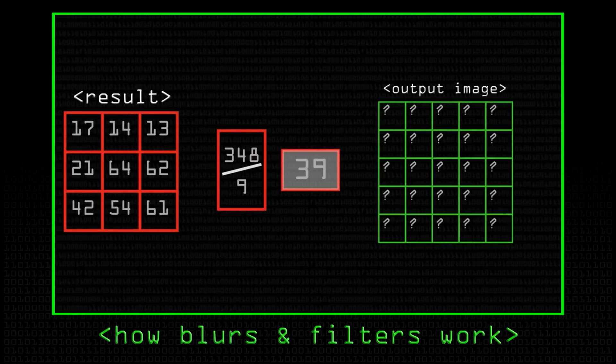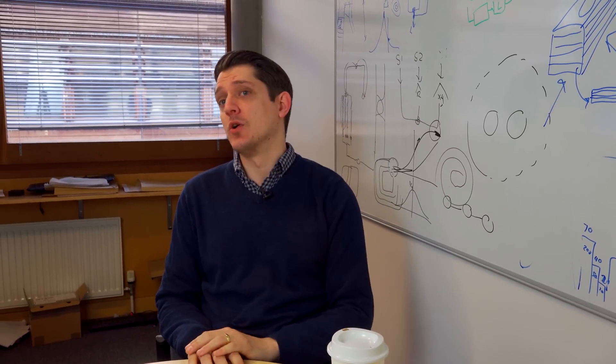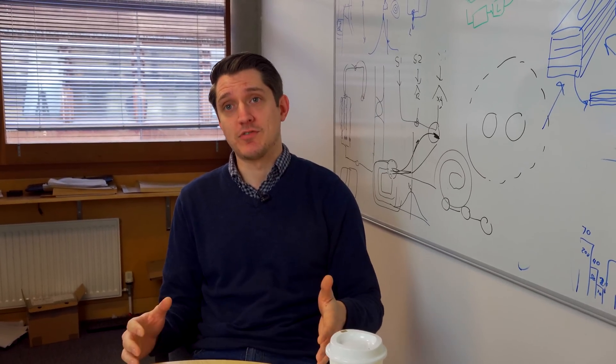Remember we talked about convolutions, and convolutions are actually used in a lot of places - Sobel operator for edge detection, but also in deep networks. Deep networks have convolutions in as well.